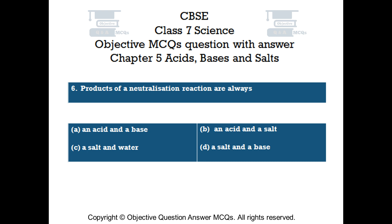Question number 6. Products of a neutralization reaction are always: Option A, an acid and a base. Option B, an acid and a salt. Option C, a salt and water. Option D, a salt and a base.